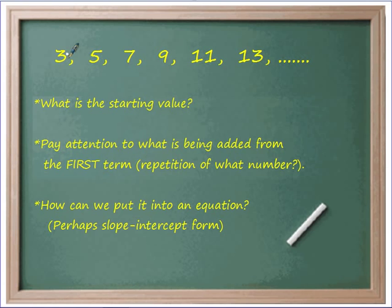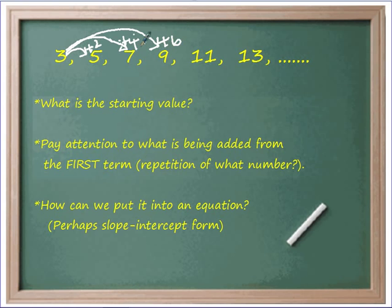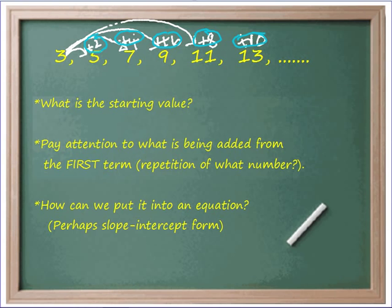From my first to my second term I added 2; from my first to my third term I added 4; from my first to my fourth term I added 6; from my first to my fifth term I added 8, then 10, and this pattern continues forever. Can you see a pattern here? These numbers are all multiples of 2. So our starting value is 3, and what's being added is multiples of 2.